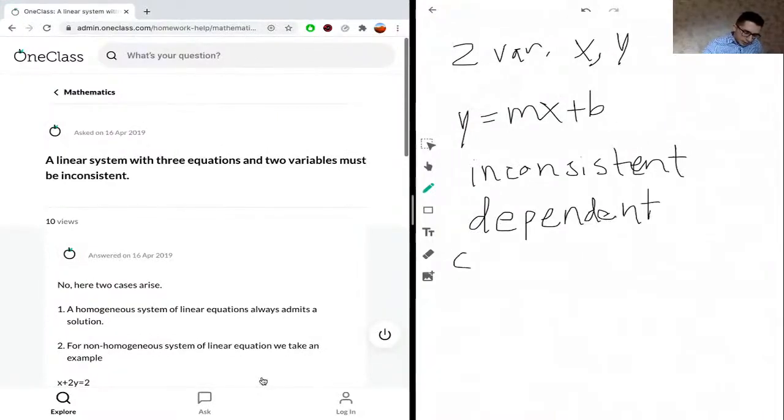And we have consistent. These are three terms that give you the relationship between any set of equations.